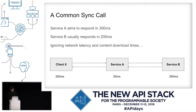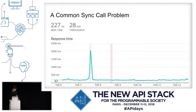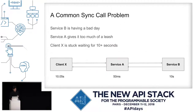Here's a common pattern. Let's ignore network latency for a minute. Service A wants to be done within 300 milliseconds and has 50 milliseconds worth of stuff to do. Service B usually responds within 200 milliseconds, so on a good day the client has its answer around 250–300 milliseconds. But what happens when service B, instead of taking the normal 200 milliseconds, decides to take 10 seconds? We have a bit of an issue. Service A is giving service B far too much of a leash — giving it enough rope to hang itself with.